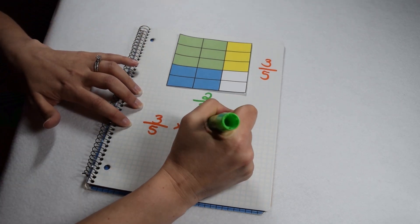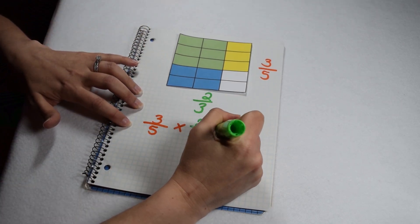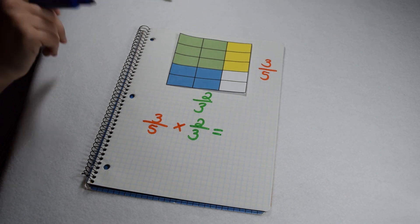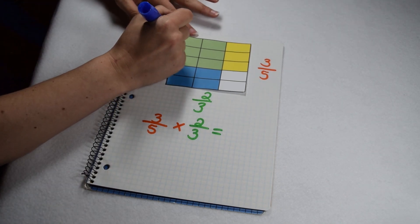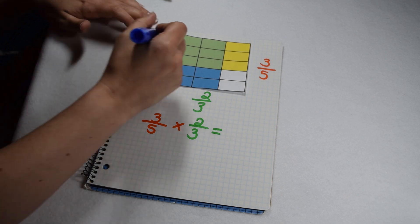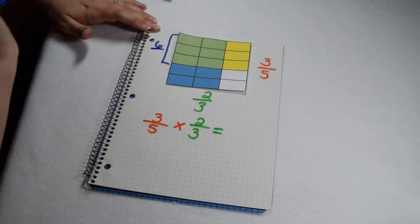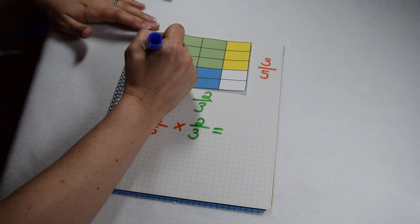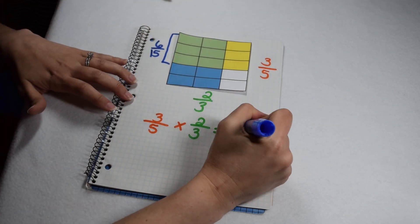So that's the second number in our multiplication problem, 3/5 times 2/3. Our solution comes where the boxes are double shaded. Yellow and blue make green, so we can see there are 6 green boxes shaded out of 15 total to give us our solution of 6/15.